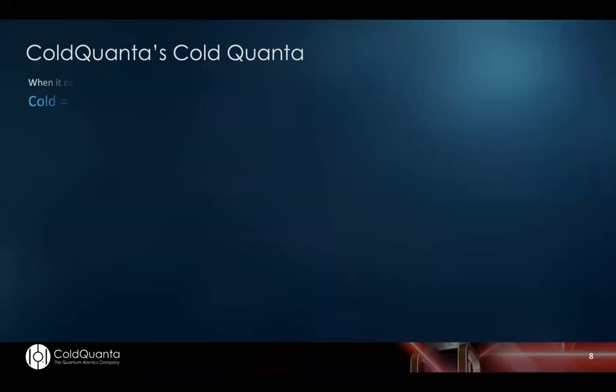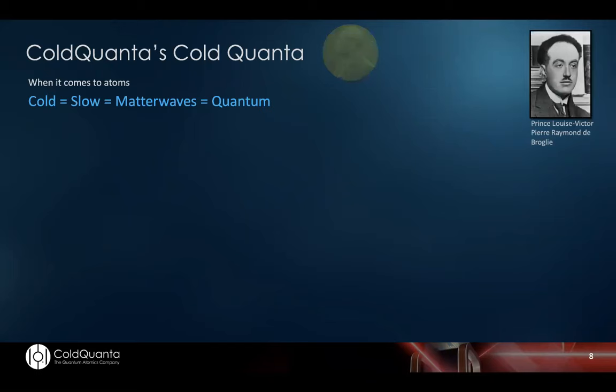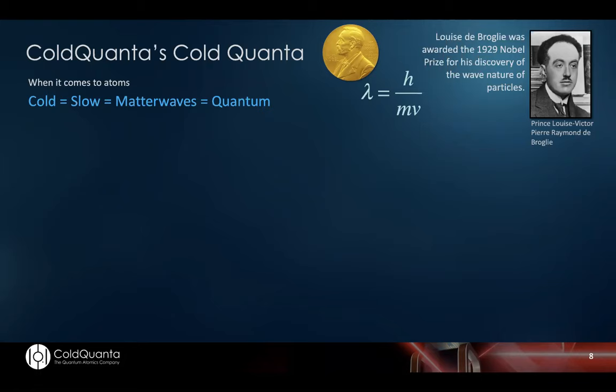So let me talk about ColdQuanta. Maybe you can understand how it got its name. Because when it comes to atoms, cold is the same as slow, is the same as matter waves. And that's all about quantum. And that goes all the way back to 1929, where Louis de Broglie was awarded the 1929 Nobel Prize for his discovery of the wave nature of particles. And that discovery is articulated in terms of a pretty simple equation: lambda equals h over m times v, where lambda is the wavelength. H is Planck's constant, divided by the mass, divided by the velocity of a particle.